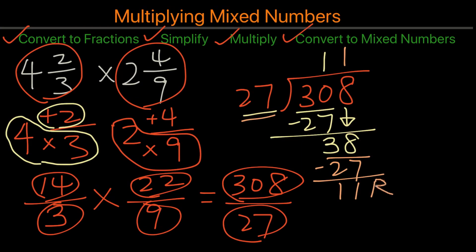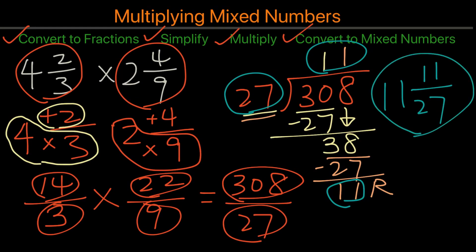And the way that we would write it as a mixed number, we would take the answer that we got, place it as a number. Secondly, we would take the remainder, place it in the numerator. And then we would take the divisor, which is 27, as the denominator. And so our answer would become 11 and 11 over 27.